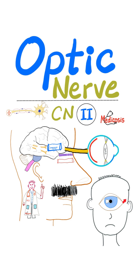If you know the name of this disease, comment below. Because the optic nerve is sensory, it starts in the periphery and heads towards the central nervous system — starting at your retina and ending in the brain.